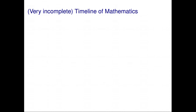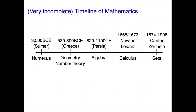Let's begin with a very incomplete timeline of the history of mathematics. We just illustrate here a few of the key milestones: geometry, algebra, calculus, set theory. All of these branches of maths are very precise and deal with very precise objects — shapes, equations, etc.